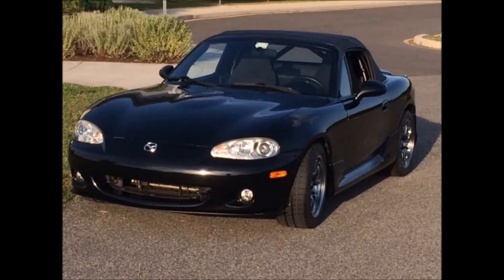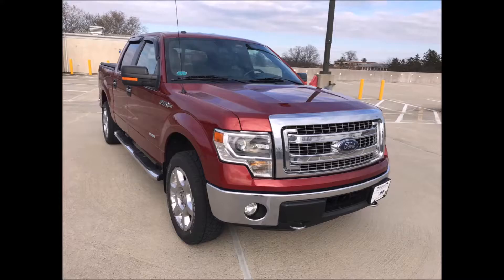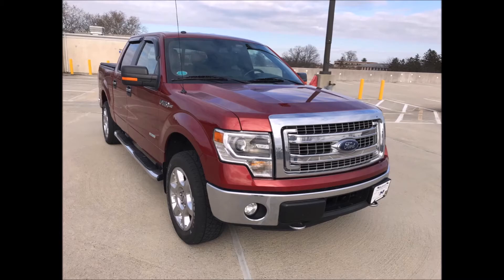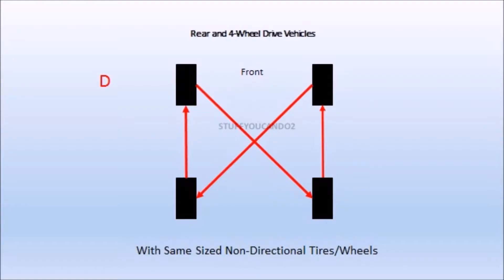Next we have a pattern that applies to rear wheel drive and four wheel drive vehicles. Again with the same size non-directional tires and wheels. This pattern is opposite of our previous pattern. In this one the rear wheels go straight forward and the front wheels cross on their way back.